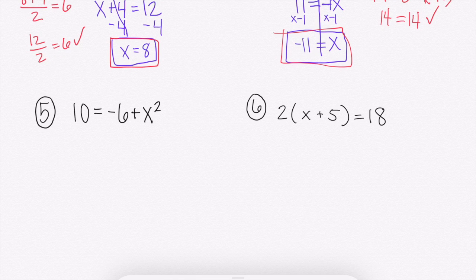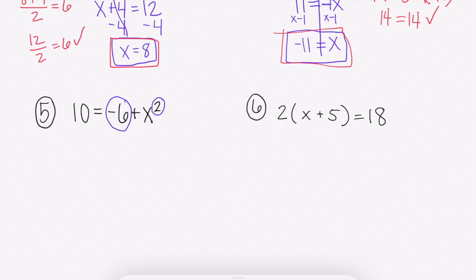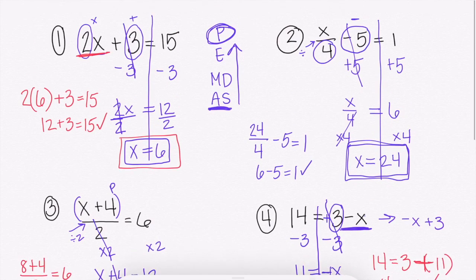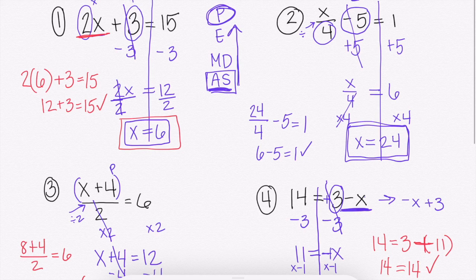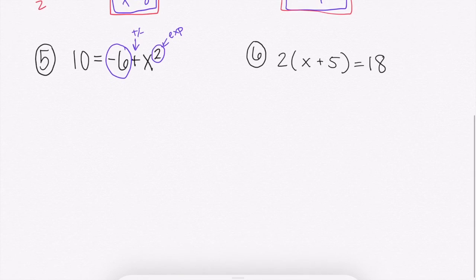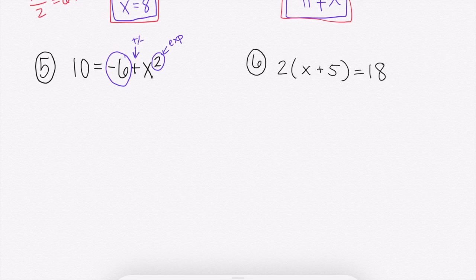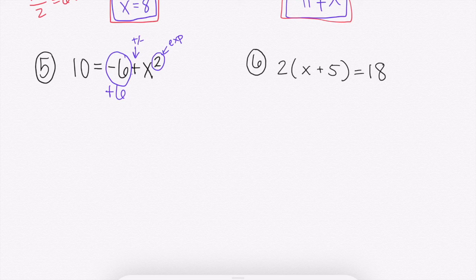Number 5: x is on the right-hand side again. On the right side we have a negative 6 and a 2 — the negative 6 is being added on, or you could think of it as minus 6. We also have an exponent. Going in reverse order, we start with add and subtract, then the exponent. So we have negative 6 being added to x squared. To get negative 6 to 0, we add 6. Negative 6 plus 6 gives us x squared, and we must do it to both sides.